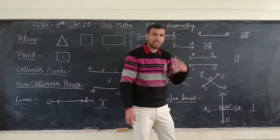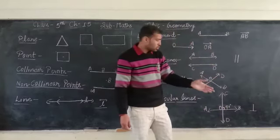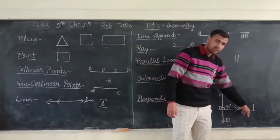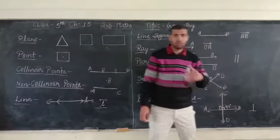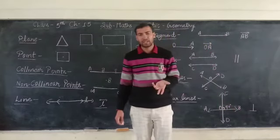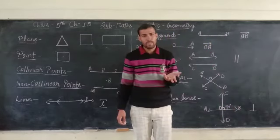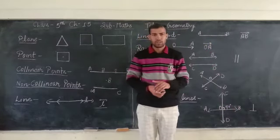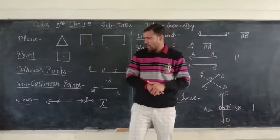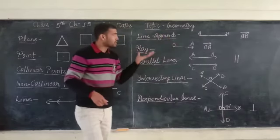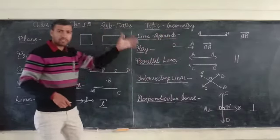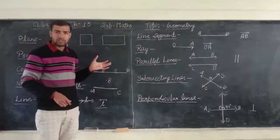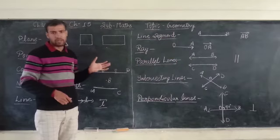Perpendicular lines meet at an outcome angle of 90 degrees. Thank you. Have a nice day.